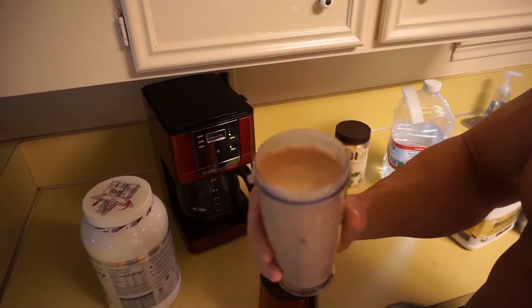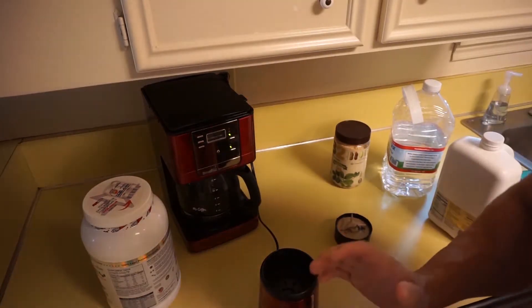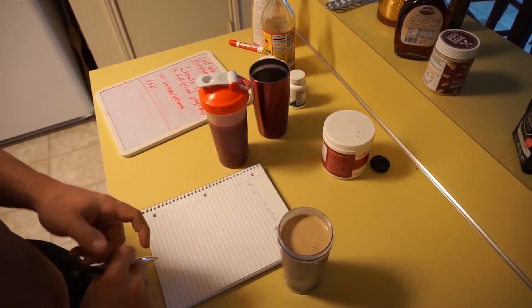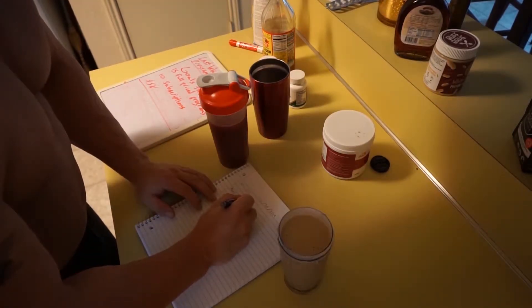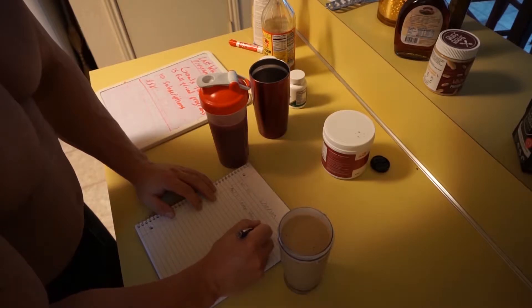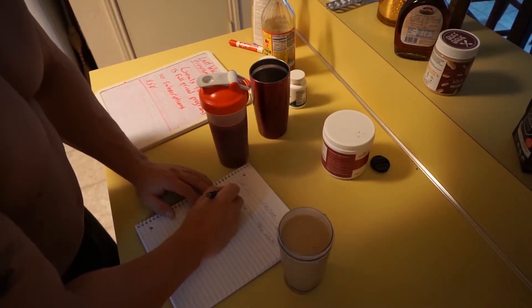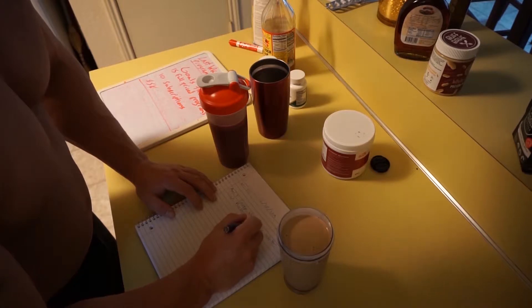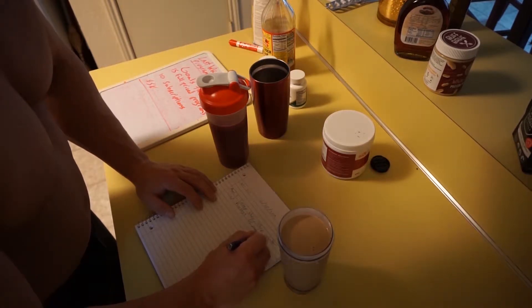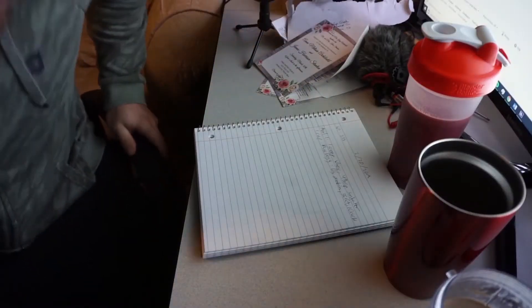Does that not look good or what? Alright, now we're gonna write the macros down for this and go eat and write our goals down. Meal one: one scoop whey, four tablespoons peanut butter, one cup Muscle Egg. So 61 grams of protein, 36 fat, 10 carbs. Alright.